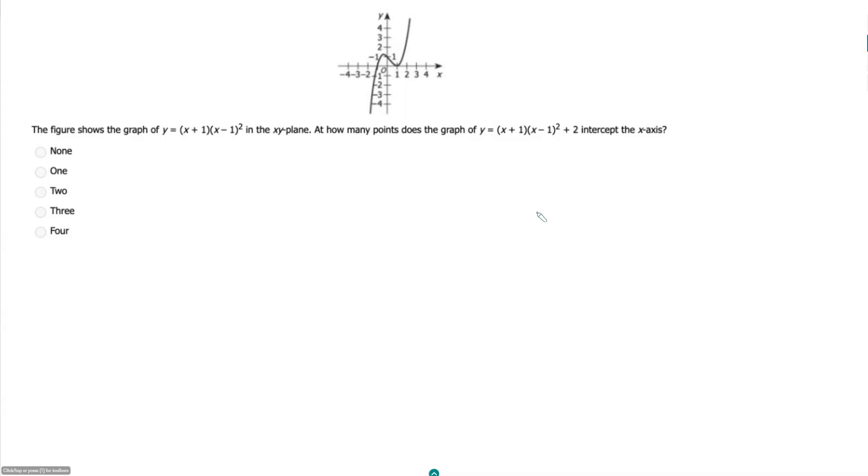So without really knowing anything about this shape here, if all I'm doing is adding 2 to my equation here, that just means this graph is shifting up two spots. So all my points should shift up, the y-value should shift up by two places.